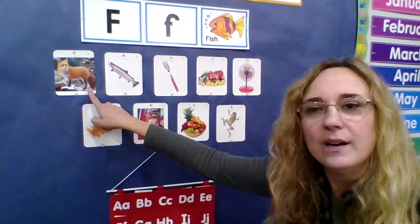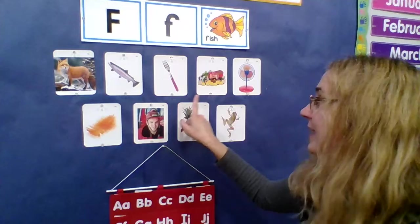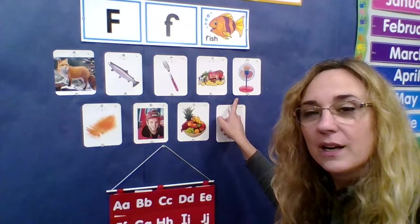All right. We got up there really close. F is for fox. F is for fish. F is for fork. F is for farm. F is for fan.